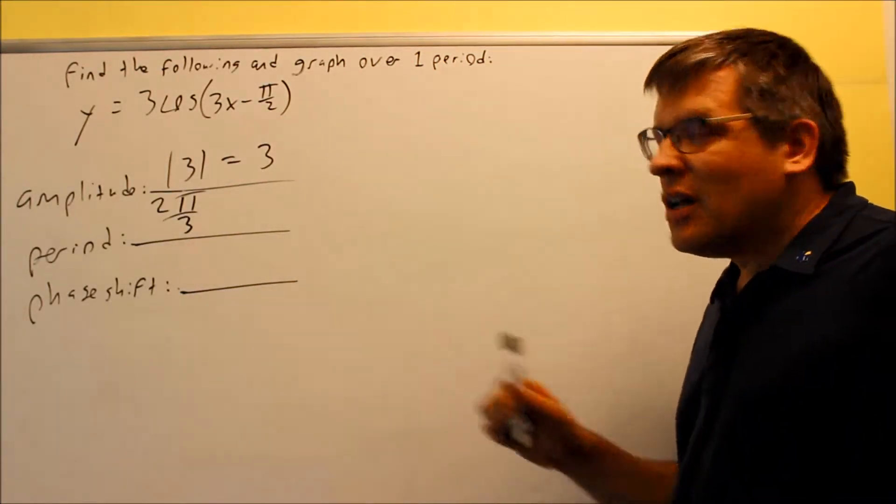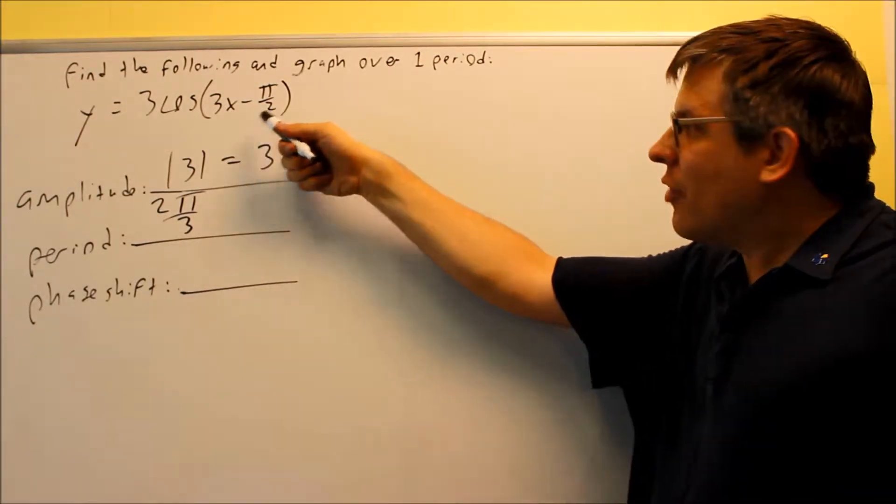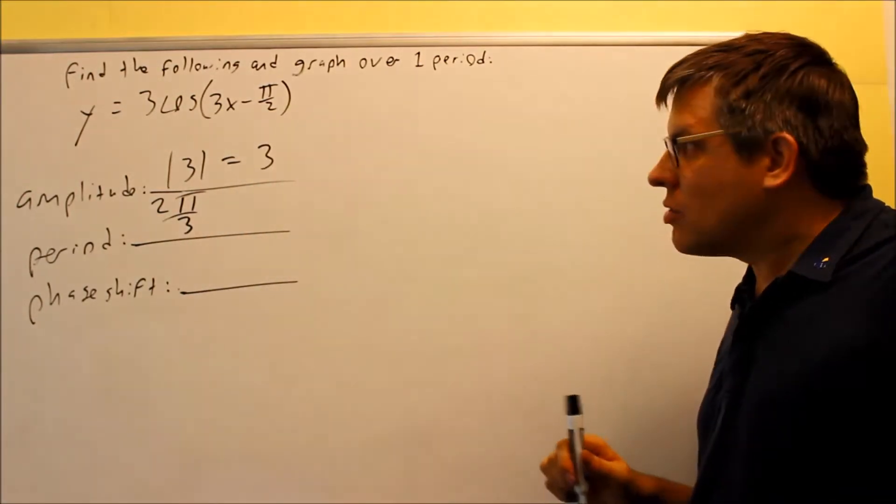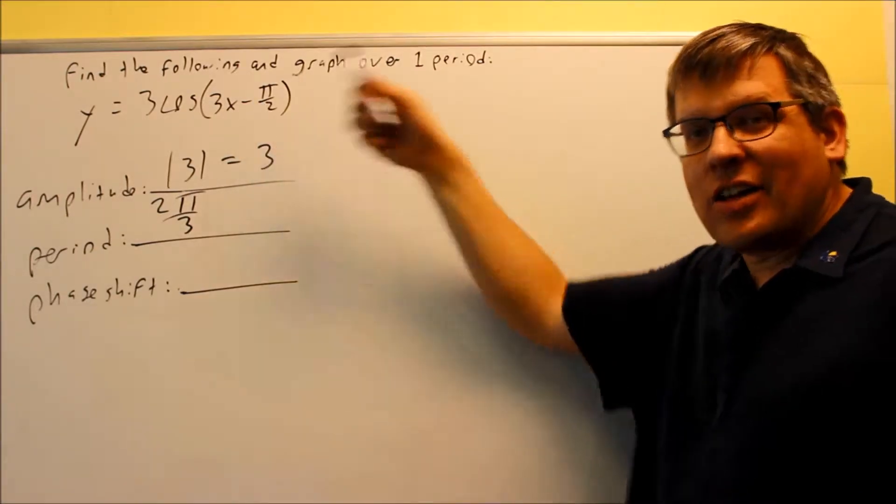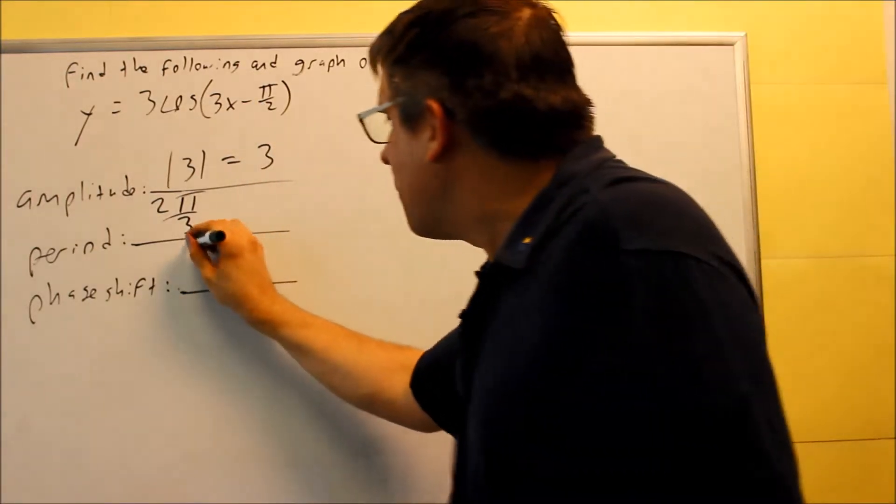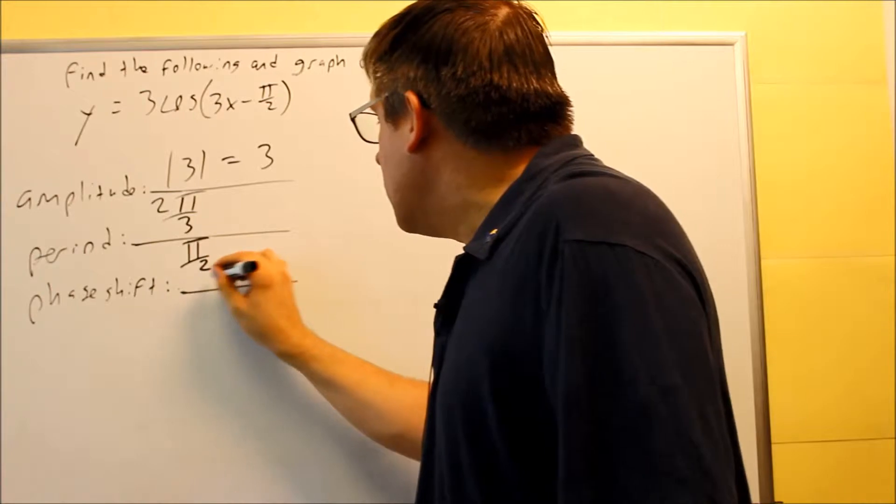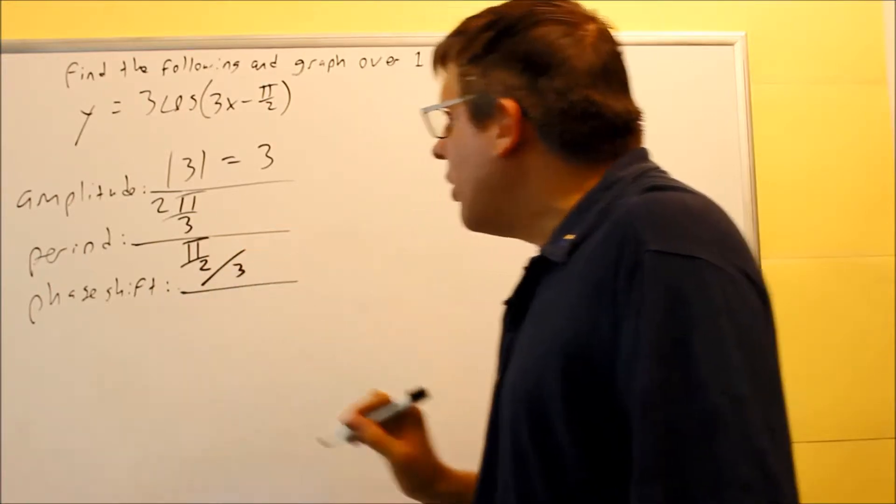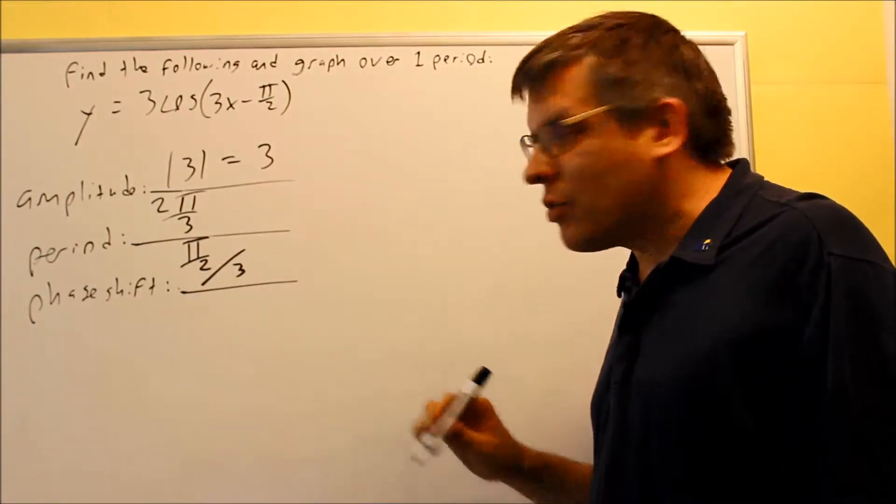Your phase shift is the opposite sign of this number divided by the number in front of the x. So in this case, because it's a minus sign there, I need to take the opposite sign of that. I'm going to do positive π over 2. I want to divide that by the number in front of the x. So I have π over 2 divided by 3.